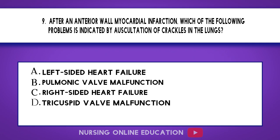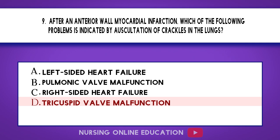Question 9. After an anterior wall myocardial infarction, which of the following problems is indicated by auscultation of crackles in the lungs? A. Left-sided heart failure. B. Pulmonic valve malfunction. C. Right-sided heart failure. D. Tricuspid valve malfunction. The answer is option A: Left-sided heart failure.